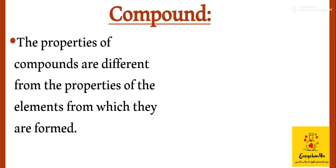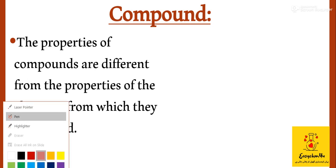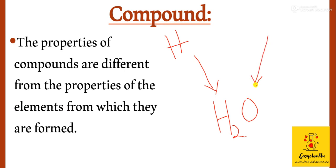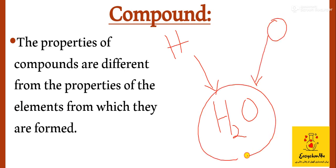The most important point about a compound is that the properties of the compound are different from the properties of the elements from which it is made. Water is made from hydrogen and oxygen elements, but the properties of water are different from both hydrogen and oxygen.